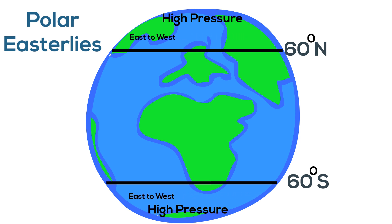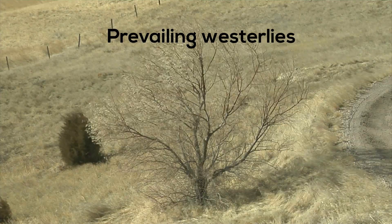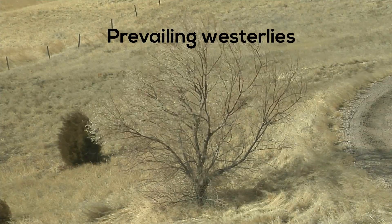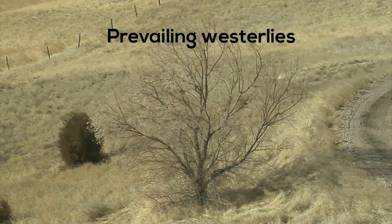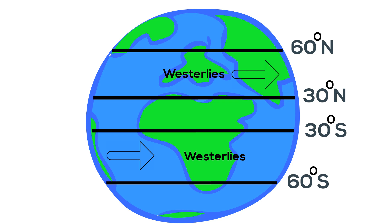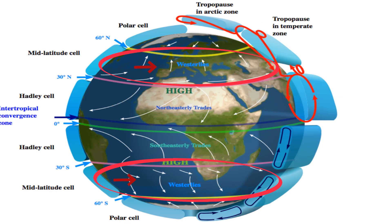The next global winds are the prevailing westerlies, and they blow from west to east. These wind belts are found between 30 degrees and 60 degrees latitude in both hemispheres. The westerlies can carry moist air over the United States, producing rain and snow.